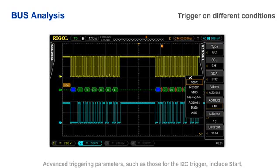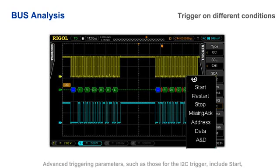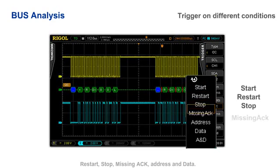Advanced triggering parameters such as those for I2C trigger include start, restart, stop, missing ACK, address, and data.